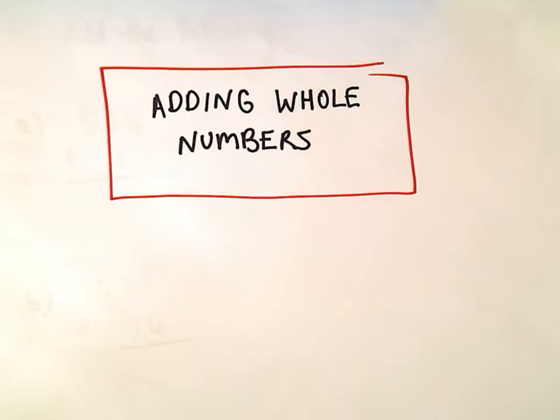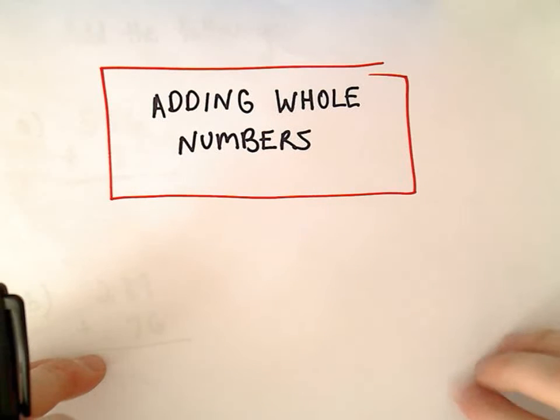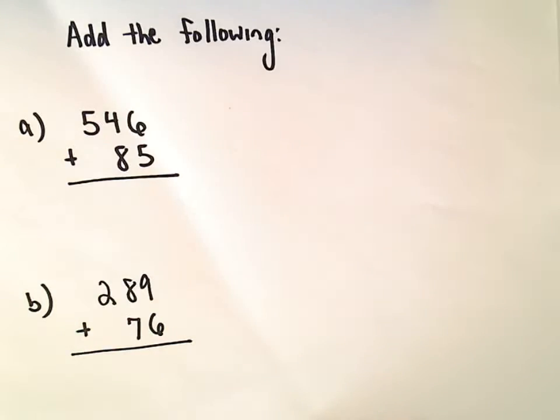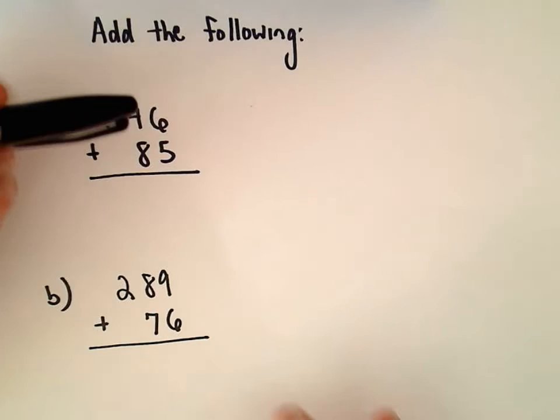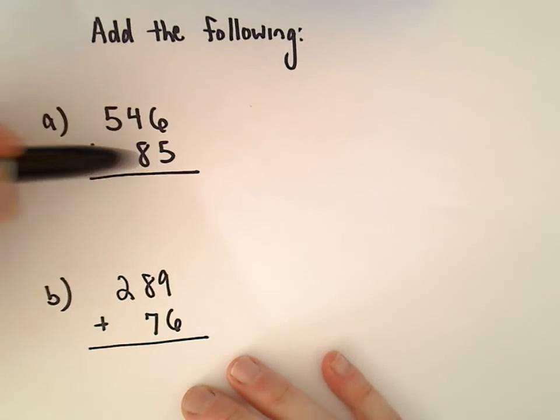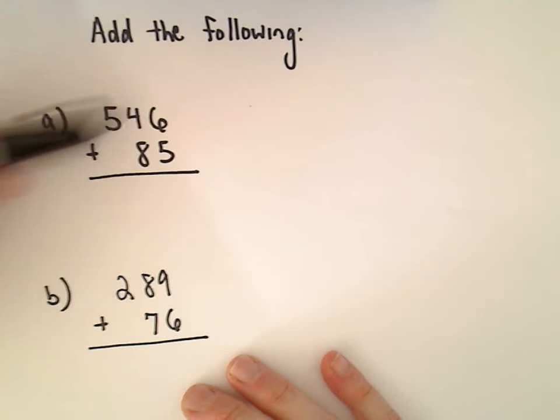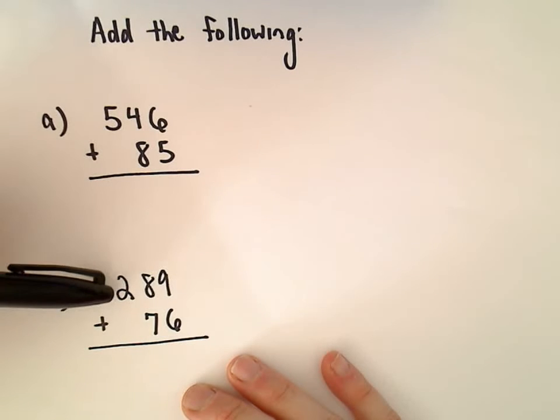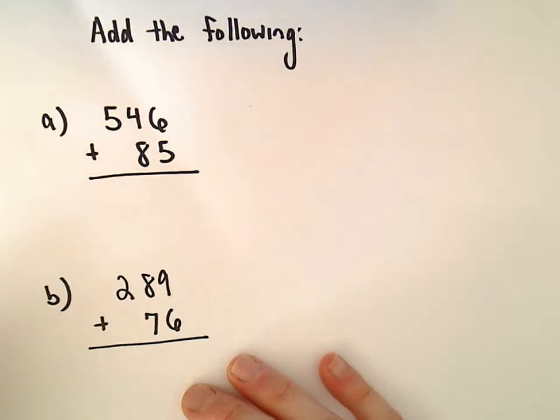All right, so a couple more examples here of adding whole numbers, and here I've got everything written vertically already. So in part A, we're going to add 546 and 85. In part B, we'll add 289 and 76 together.